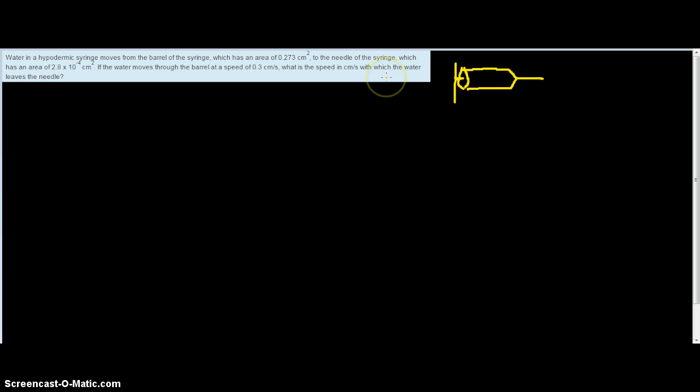Okay, what we're asked to find, so let's read this and consider what it is we're being asked to find. It says, water in a hypodermic syringe moves from the barrel of the syringe, which is this large region here, which has an area of 0.273 centimeters squared to the needle of the syringe, which is this fine point down here, which has an area of 2.8 times 10 to the minus 4th centimeters squared. If water moves through the barrel at a speed of 0.3 centimeters per second, what is the speed in centimeters per second with which the water leaves the needle?